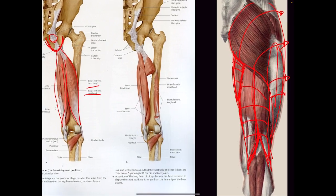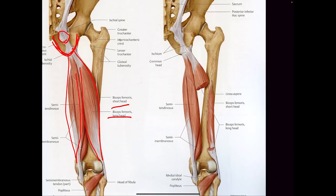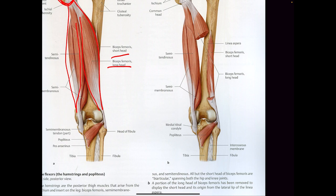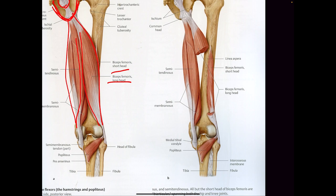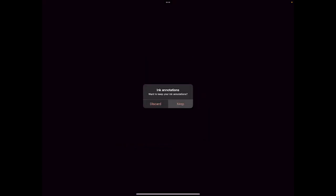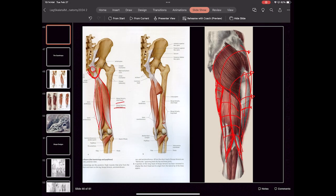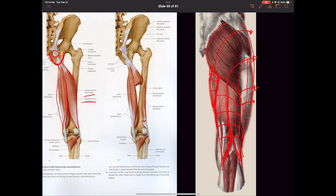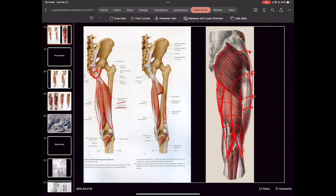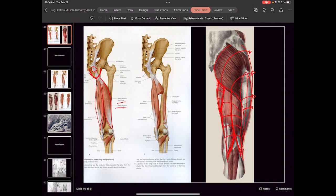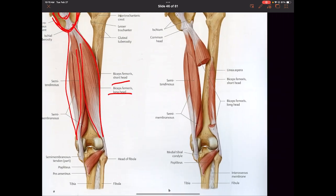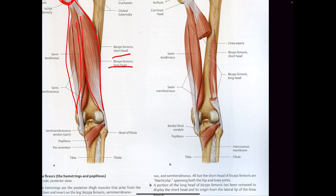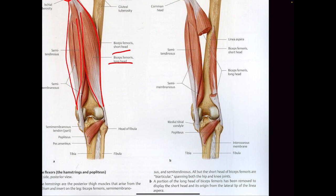The biceps are actually broken into multiple names: the semi-tendinous, semi-membranous, and the bicep femoris long head. The short head you don't see — it's tucked underneath the long head. So those are really complicated names. You have three muscles that make up two big shapes on the back of your leg.